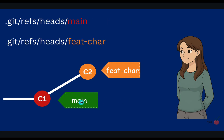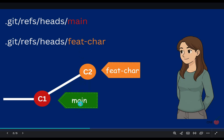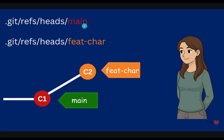Commits in Git are nothing but pointers or labels. The main branch is nothing but a simple file called main, located in this position. Similarly, the feature branch is another file in this position. Inside main, all it contains is the hash ID of commit one — it's just a pointer to commit one. Inside feature-chair, it contains the hash ID of commit two.